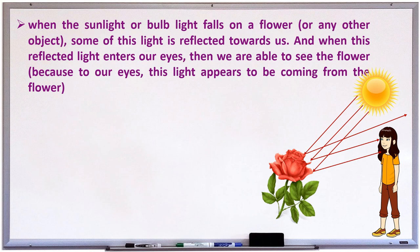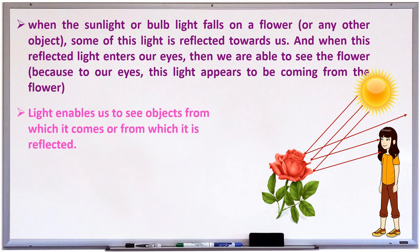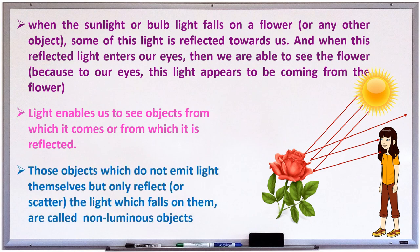Because, to our eyes, this light appears to be coming from the flower. But in actual, it is reflecting the sunlight. Light enables us to see the objects from which it comes or from which it is reflected. Which means, we can see many reflecting objects or some luminous objects also. Those objects which do not emit light themselves, but they are reflecting the light that falls on them, are called non-luminous objects.